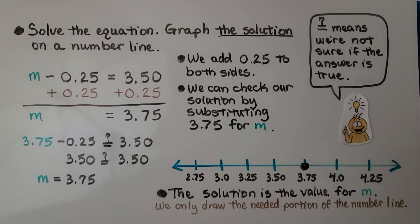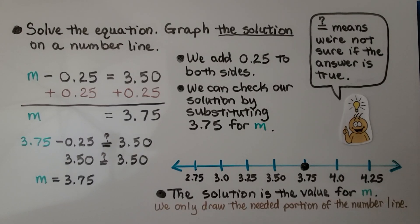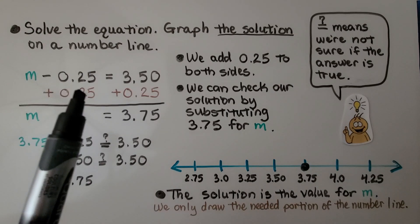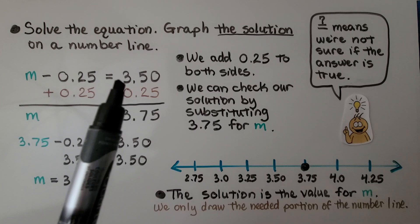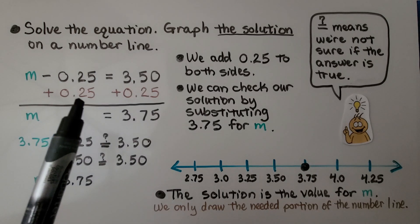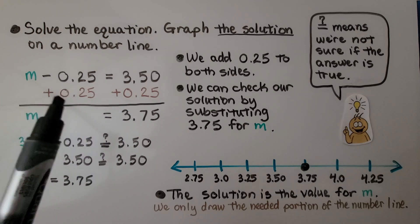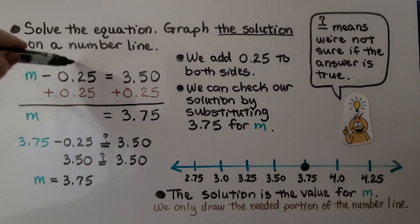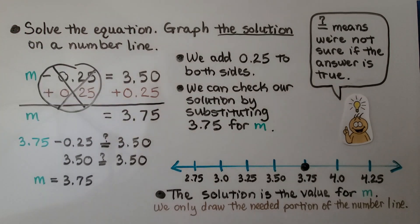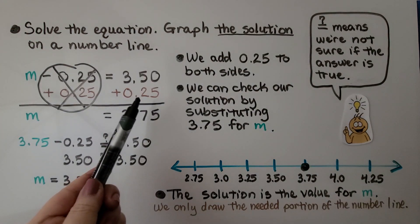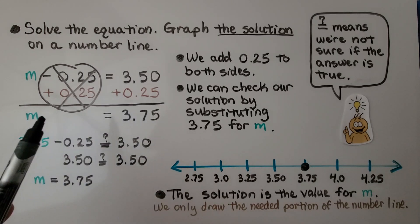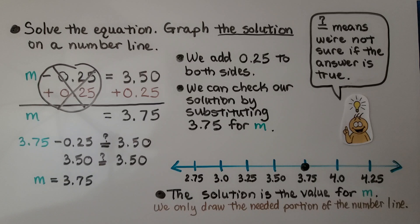Now we solve the equation and graph the solution on a number line. We have some number m minus 25 hundredths is equal to 3 and 50 hundredths. We add 25 hundredths to both sides of the equation, and that is going to create a zero pair and eliminate it. When we add 25 hundredths to this side of the equal sign, we get 3 and 75 hundredths. We know that m is equal to 3 and 75 hundredths.